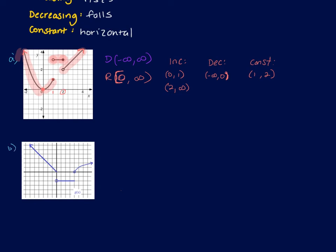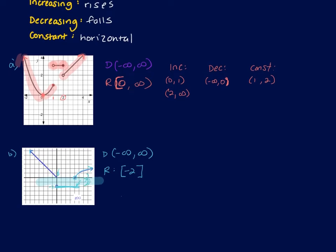For graph B, domain: it starts with an arrow on the left, has breaks that connect via solid-open dot pairs, and ends with an arrow on the right — negative infinity to positive infinity. Range: the first value is negative two (bracket), there's a break from negative two to zero, then starting again at zero with both arrows pointing up, going to positive infinity. The zero gets a bracket because the line counts as a solid dot there. Increasing, decreasing, constant: first part is decreasing from negative infinity to zero, then constant from zero to four, then increasing from four to positive infinity.